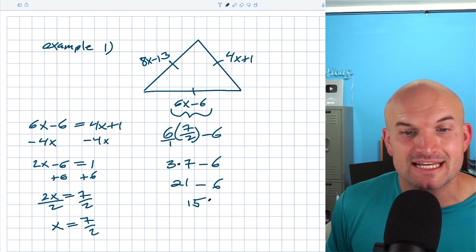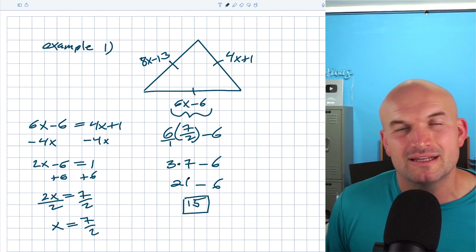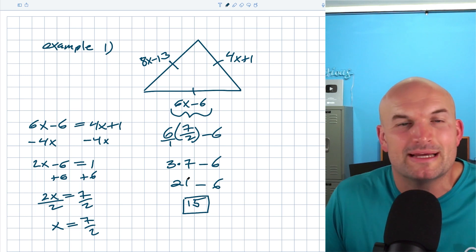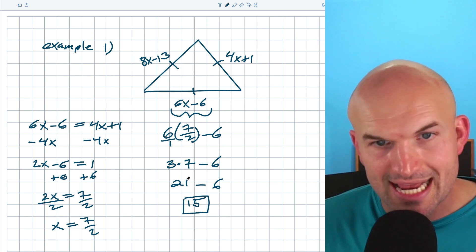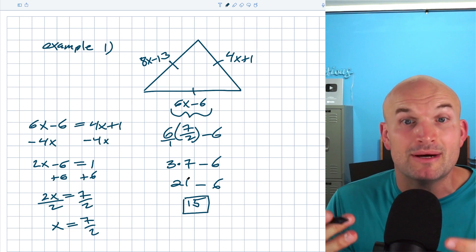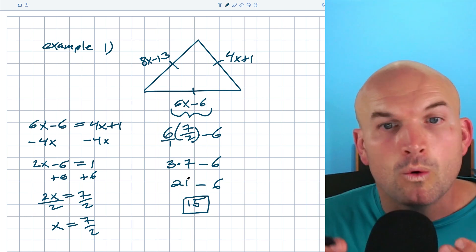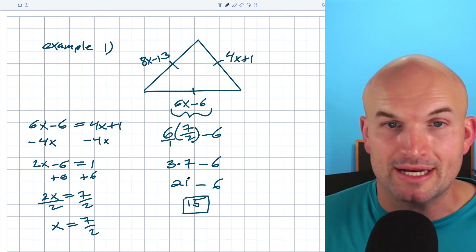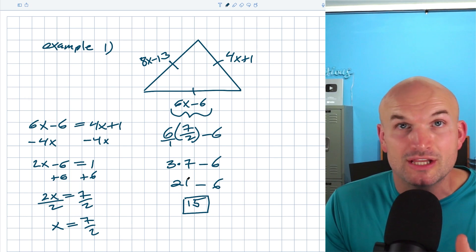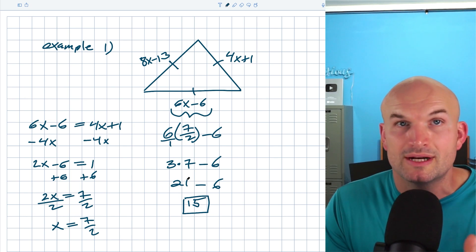Therefore, the length of each of these sides is going to be 15. Again, it could be in feet and centimeters, inches, whatever may be your problem. But hopefully you guys understand that there is no way I could solve this problem unless I knew what type of triangle it was. Once I knew that it was an equilateral triangle, I could go ahead and set my two sides equal to each other, solve for X, and then plug it into one of the sides.